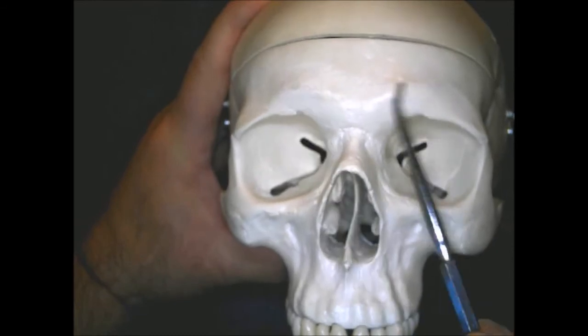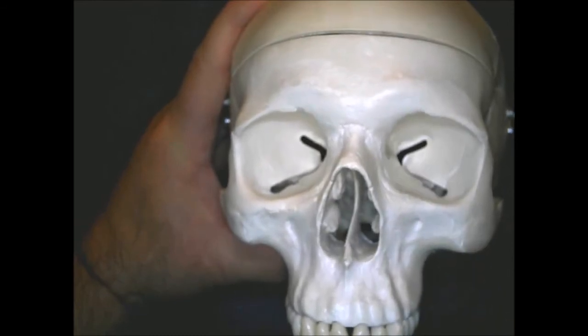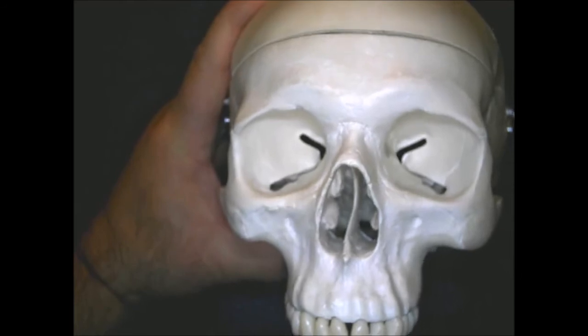Right here where the eyebrows would sit is called the super ciliary ridge. And those are the two structures you need to be familiar with on the frontal bone.